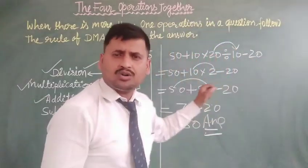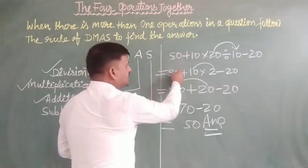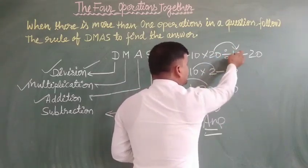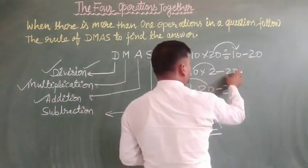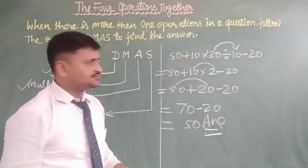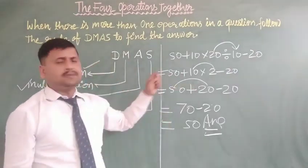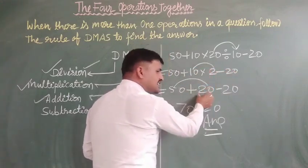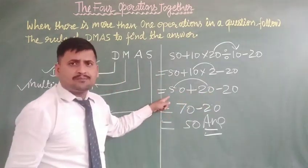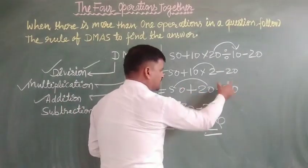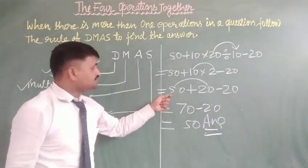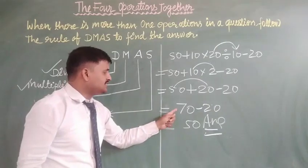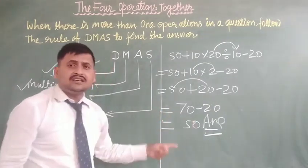Let me explain clearly. Write down 50, and the new product: 20 divided by 10 is equal to 2. Then: 50 plus 10 multiplied by 2 minus 20. Second work is multiplication: 10 multiplied by 2 equals 20. Write down in proper sequence: 50 plus 20 minus 20. Third work is addition: 50 plus 20 is equal to 70. Fourth and last work — subtraction — 70 minus 20 is equal to 50. And 50 is your answer.